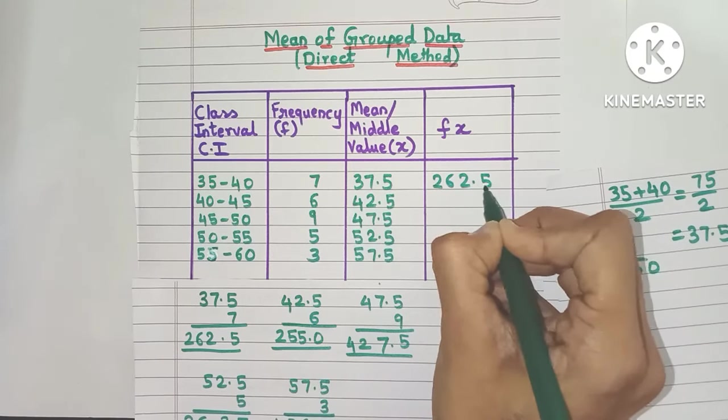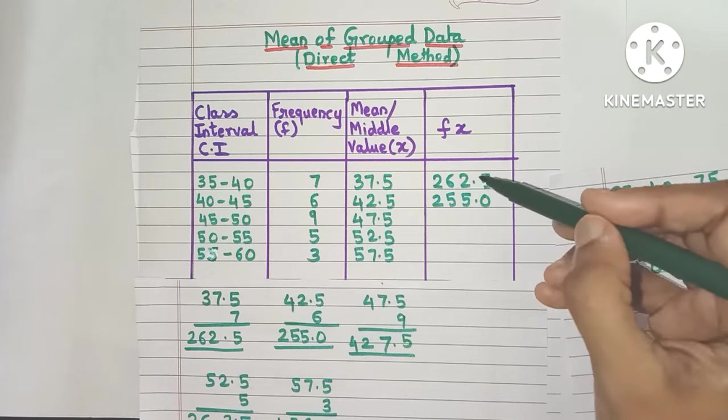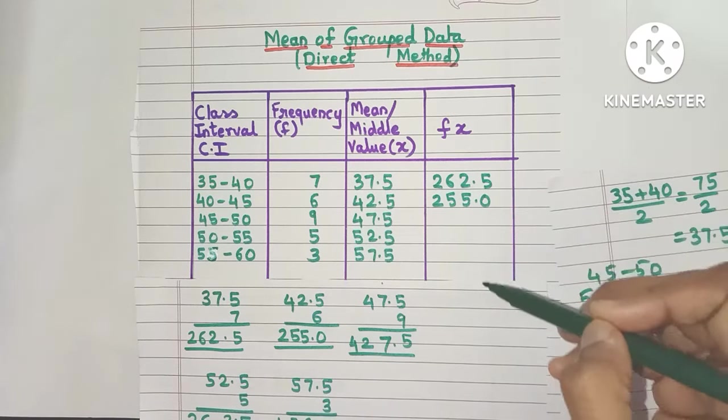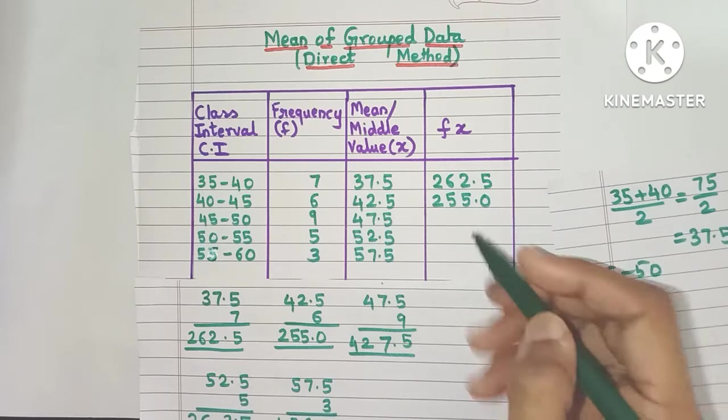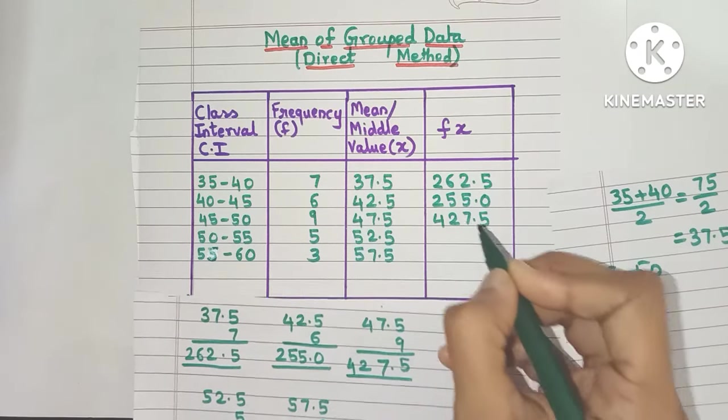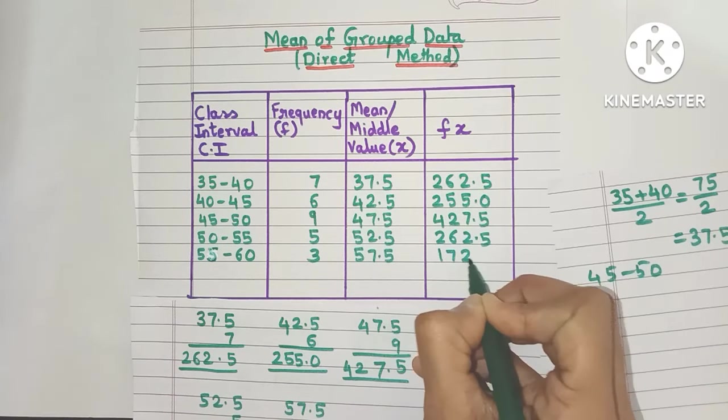Here I have 262.5, then I have 255.0. One thing to be noted is that you need to place the decimal point one below the other and also the digits one below the other. This way your next step will be very easy. These are all the fx values that we have.